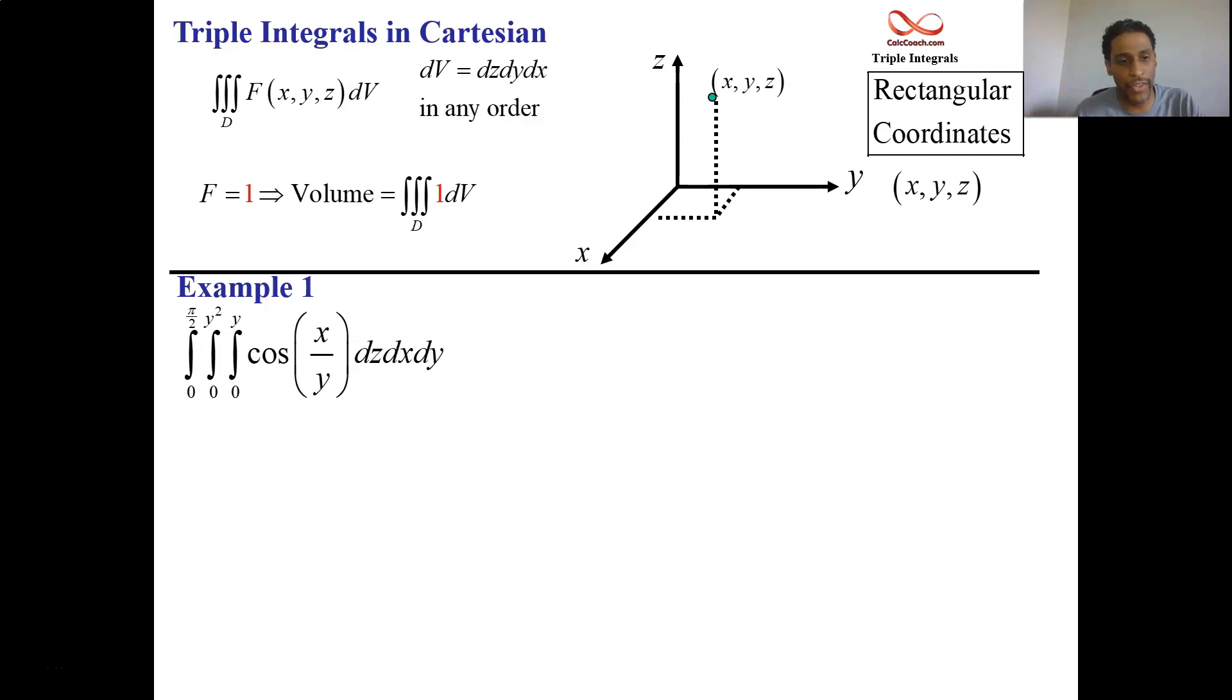If your function inside has no z's in it, then that's considered a constant. I know it's cosine, I know it's x and y on top of y, but it is a constant with respect to z. And so you just get this constant times z, and then you put the two different values of z, the upper bound on z and the lower bound on z. So you're just going to go ahead and plug a y in and plug a zero in. So now you're looking at a double integral.